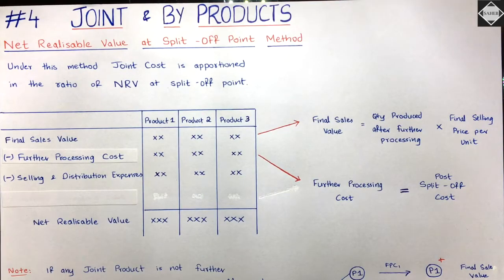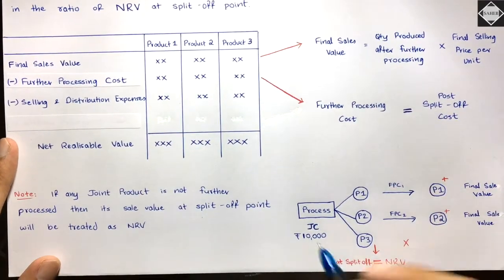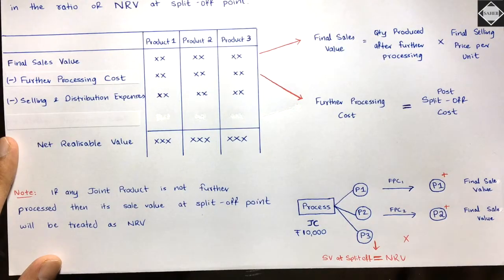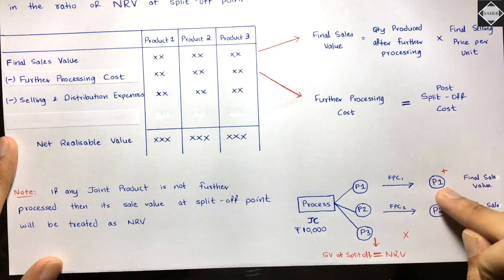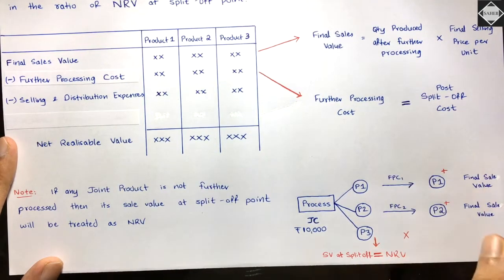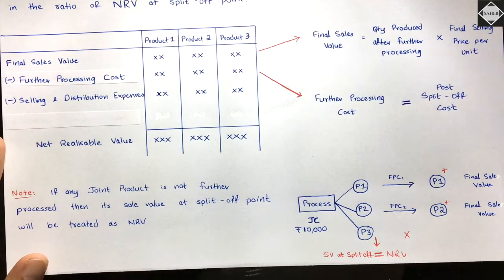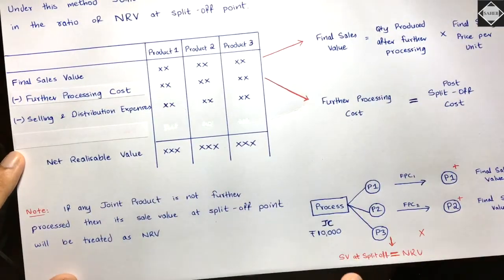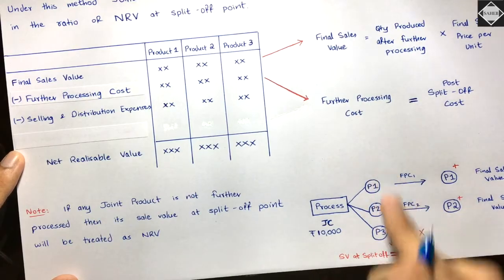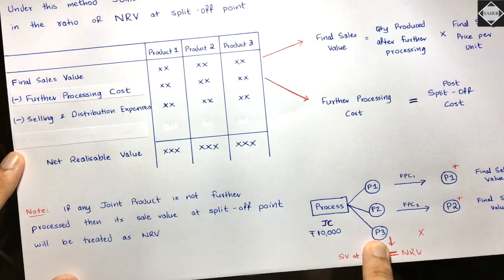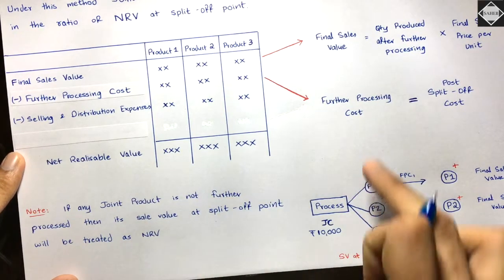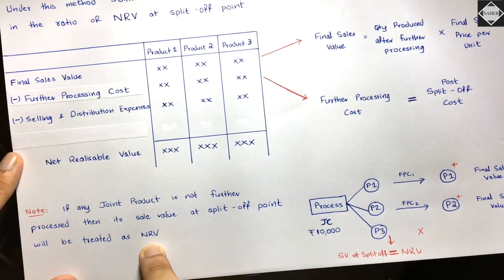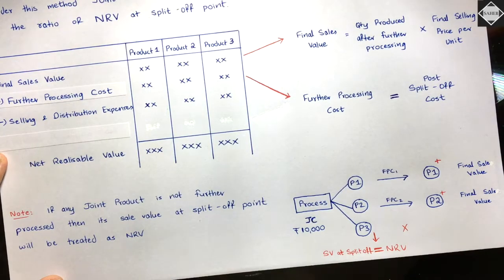There is one important hidden adjustment. Suppose from the common process three joint products P1, P2, P3 come out. P1 and P2 are further processed and have a final sales value after further processing. But P3 is not further processed because there is no benefit to do so. In this case, the sale value of P3 at the split-off point will be treated as its net realizable value.